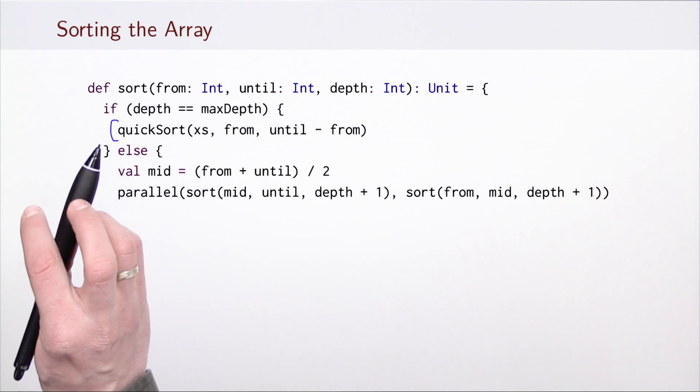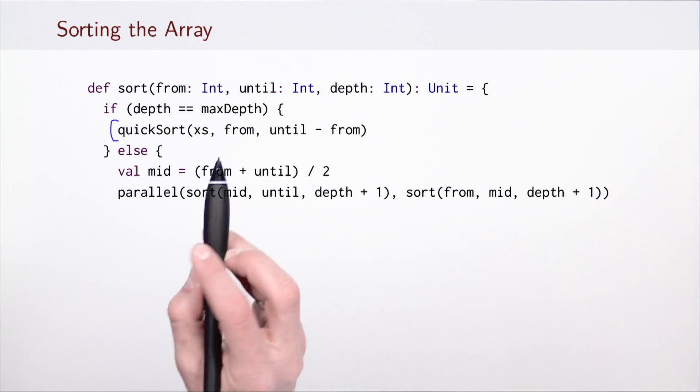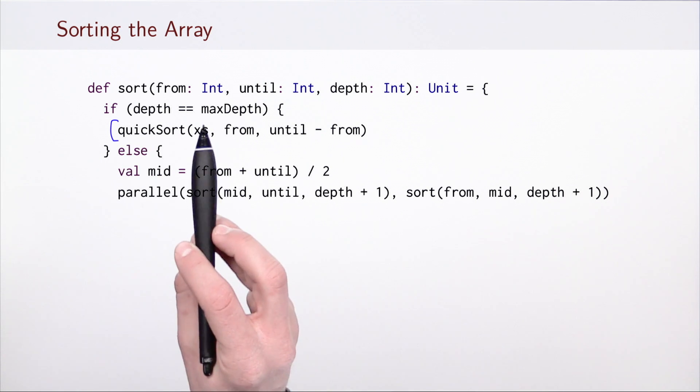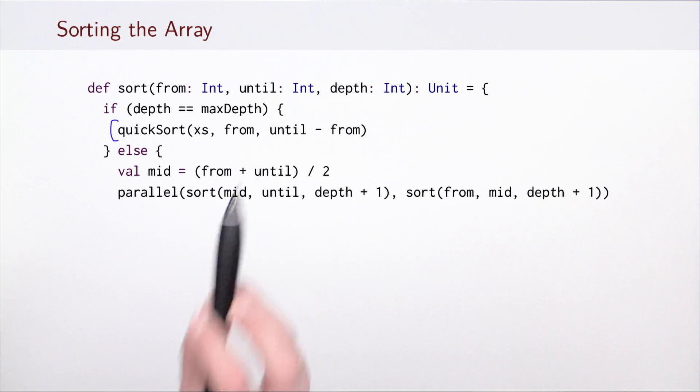Previously we have triggered this base case when the segment length was sufficiently small. In this case this is controlled using this depth parameter and we will stop parallelization when the depth reaches maximum depth.